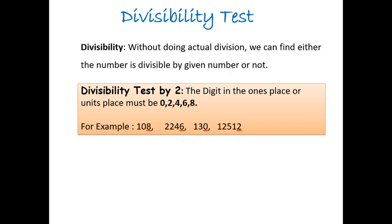Now, let us see the next example. 2,246. The last digit is 6. So, it is divisible by 2. The next example is 130. The last digit is 0. So, it is divisible by 2. The next example is 12,512. The last digit is 2. So, it is divisible by 2.